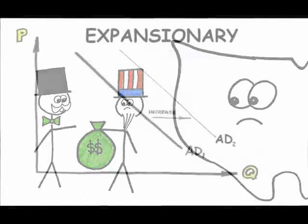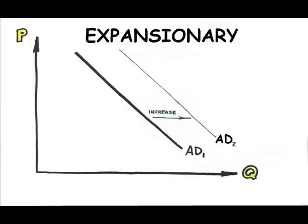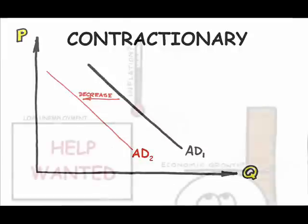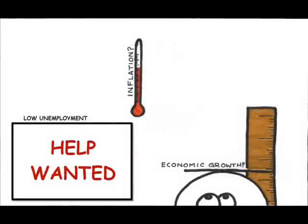So, expansionary fiscal policy, lower taxes and or higher spending, will increase aggregate demand. Contractionary policy, higher taxes and or lower government spending, will decrease aggregate demand. If fiscal policy is meant to address the three macroeconomic goals, when is each type of policy appropriate?